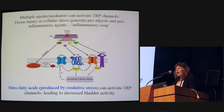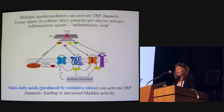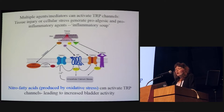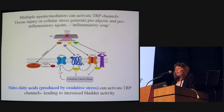There are a number of agents that can activate TRP channels, particularly focusing on TRPA1 and TRPV1. Tissue injury or stress can generate pro-algesic, pro-pain, or inflammatory mediators — collectively called an inflammatory soup — including NGF, changes in pH, bradykinin, and other factors. This can also induce oxidative stress, and by increasing oxidation and lipid peroxides, nitro fatty acids are generated, which can activate both TRPV1 and TRPA1, leading to increased bladder activity. There is considerable interest in nitro fatty acids in the context of bladder pain and overactivity.